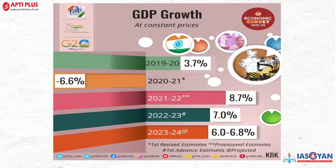GDP growth at constant prices: in 2019-20 it was 3.7%; in 2020-21 during the COVID-19 surge it was minus 6.6%; during recovery it was 8.7%; for 2022-23 it was 7.0%; and the anticipation for 2023-24 is 6.0 to 6.8%. These are very important numbers for competitive examinations.